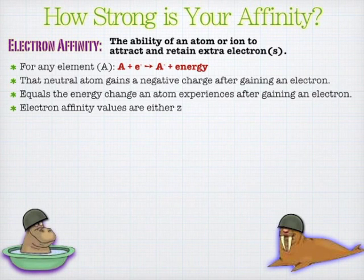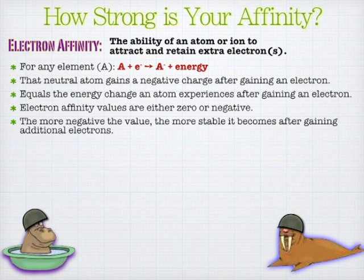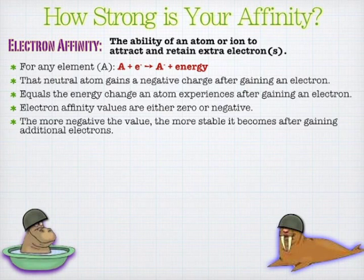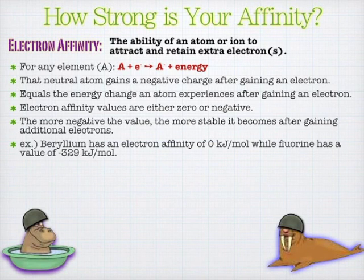All electron affinity values are either zero or negative. This is where it gets a little confusing, because we measure affinity by how much energy is given off when it gets that electron and becomes more stable. Remember, gaining electrons increases the stability of an atom. So something like beryllium doesn't really want extra electrons, and so it's not going to have much of an affinity for them.